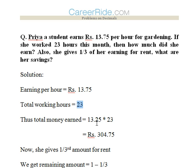Earning per hour is Rs. 13.75. Total working hours are 23. So we'll multiply 13.75 by 23. We get the answer as Rs. 304.75. This is the total money earned.